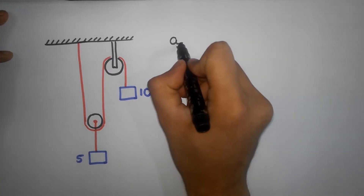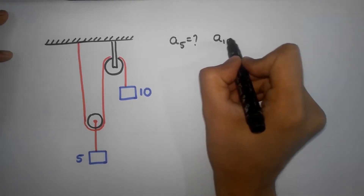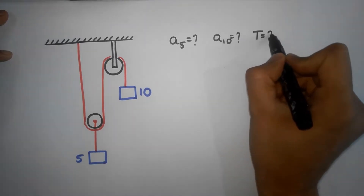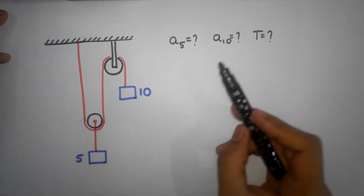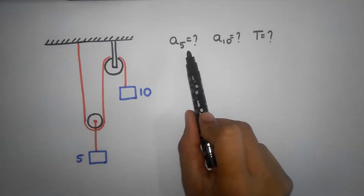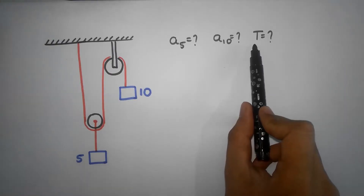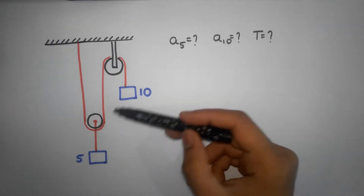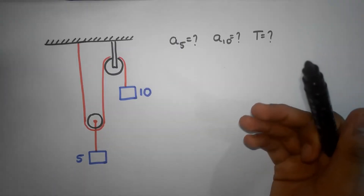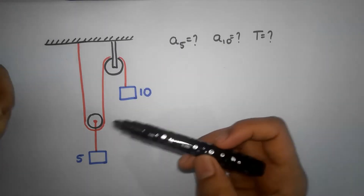We want to calculate acceleration A5 and acceleration A10, and also the tension in the string. If you followed my last episode, we require three equations to solve these three unknowns. We can only build two equations from Newton's second law, and the third equation comes from constraint motion. So we need to build a constraint equation.